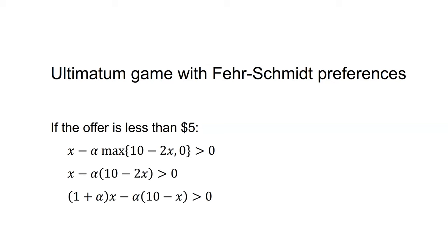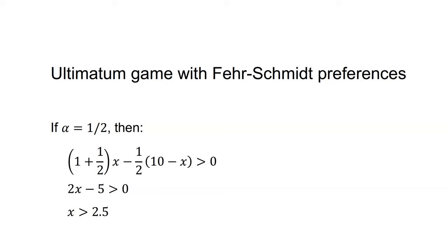If the offer is less than $5, the beta term is multiplied by zero and the inequality becomes X minus alpha times max(10 minus 2X, 0) is greater than zero. As 10 minus 2X is greater than zero when the offer is less than $5, that simplifies to X minus alpha(10 minus 2X) is greater than zero, or (1 plus alpha)X minus alpha(10 minus X) is greater than zero. Whether this holds depends on the value of alpha and the size of the offer X. If alpha equals one-half, this simplifies to 2X minus 5 greater than zero, or X greater than 2.5. So a responder with alpha equals one-half will reject any offer under $2.50.